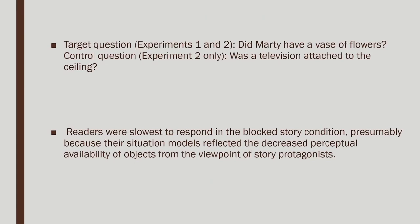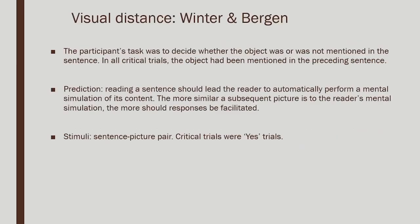The target question was: 'Did Marty have a vase of flowers?' If the reader is viewing the scene as Marty does, then in the first blocked case, the viewer will also think of a blocked scenario. Readers were slowest to respond in the blocked story because Marty cannot see when the nurse pulled the curtain. The readers were also slow to respond about the vase because their situation models reflected decreased perceptual availability — because the protagonist in the story had decreased perceptual availability. Similarly, the readers also behaved the same way.